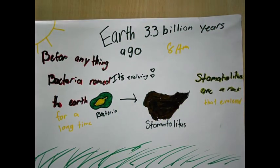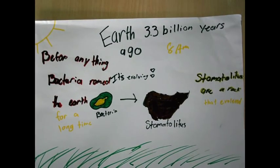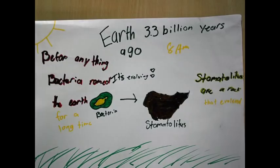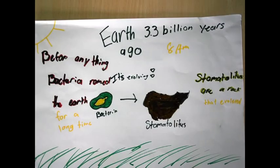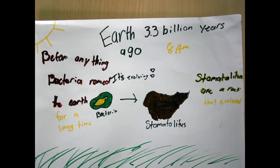3.3 billion years ago, at 8 p.m., bacteria roamed the Earth for a long time. They evolved into these things called stromatolites. Stromatolites are a rock that evolved from bacteria.